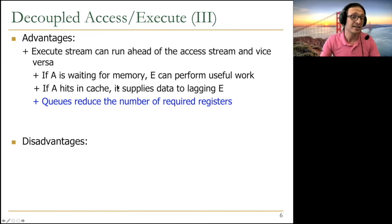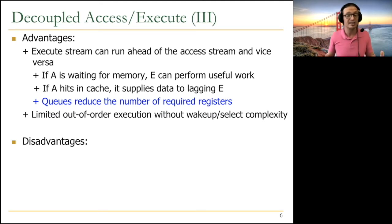The big advantage is execute stream can run ahead of the access stream, and vice versa. If the access processor is waiting for memory, execute processor can perform useful work. If access processor hits in the cache and it's not waiting for memory, it supplies the data to the lagging execute processor. Usually, the memory accesses take longer, so execute can perform useful work, independent instructions, while the access processor is waiting. The key idea is queues reduce the number of required registers. You don't have to have thousands of registers or physical registers like in an out-of-order engine. You have limited out-of-order execution without the wake-up and select complexity and without large physical register files.